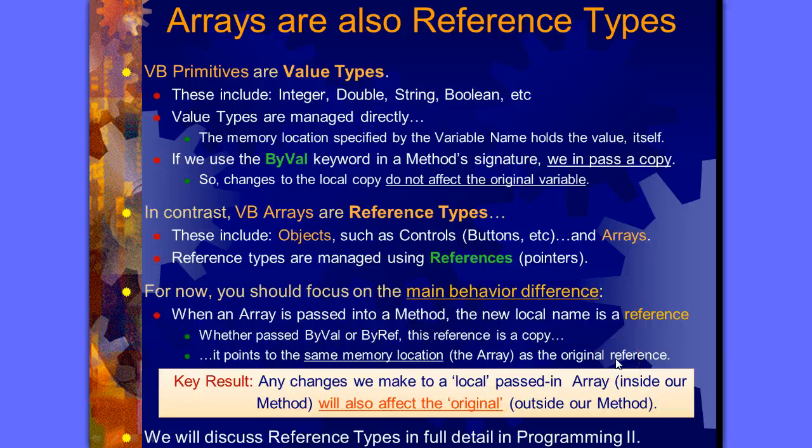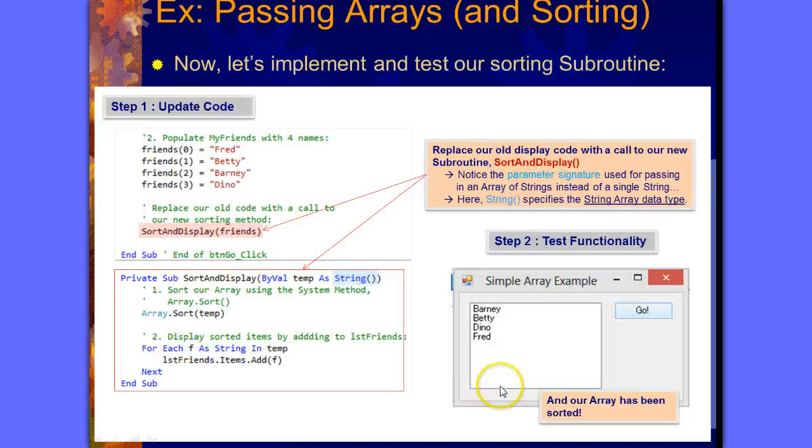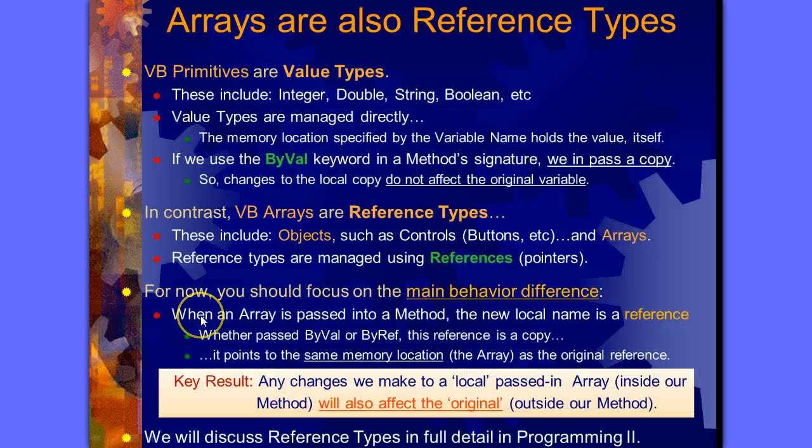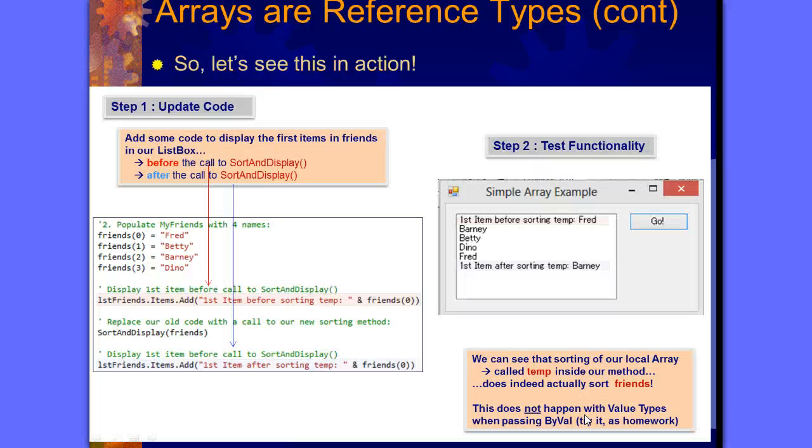The key result: any changes we make to a local passed-in array, temp, which we're changing because we're sorting it, will also affect the original outside our method. We'll discuss reference types in full detail in Programming 2. So let's see if that's true, if it really happens. Let's go back and check to see if this is actually true.